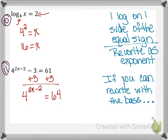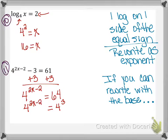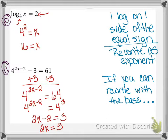Adding 2 to both sides: 2x = 5. Dividing both sides by 2: x = 5/2. You certainly could take the log of both sides — it's not wrong, just more complicated — but rewriting with the same base is easier. My final answer is x = 5/2.